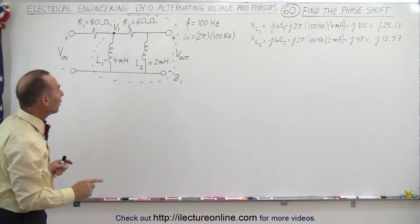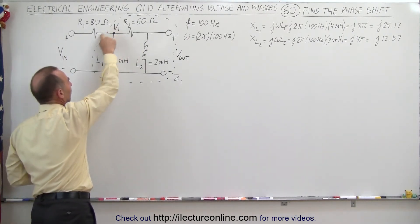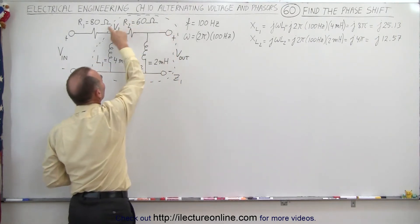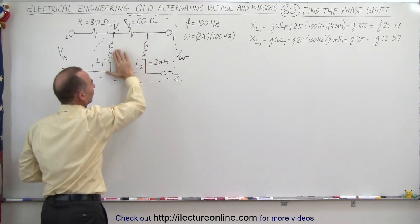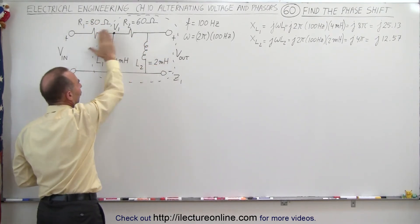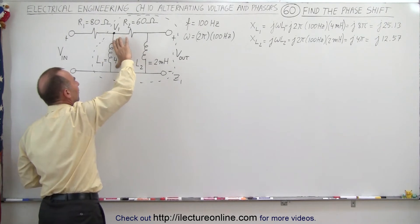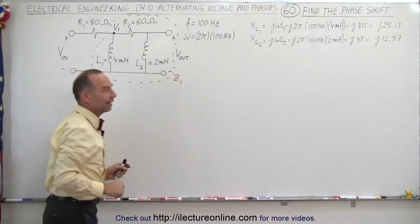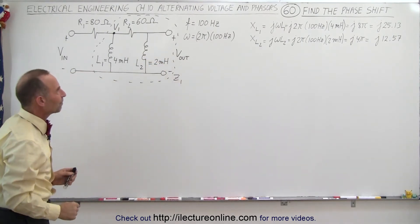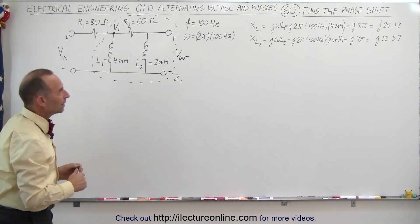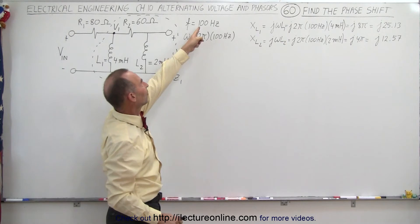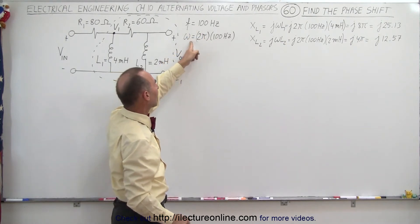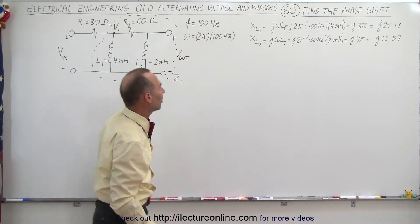To do that, we need to find the voltage at this point right here, and we're going to need to find the impedance of this part of the circuit so we can use the voltage divider — the voltage dropped across this part of the circuit relative to voltage dropped across the whole circuit. Then V1 becomes the input voltage for this part of the phase shifter. We've already calculated the inductive reactance of L1 and L2 since we were given that the frequency is 100 Hz.